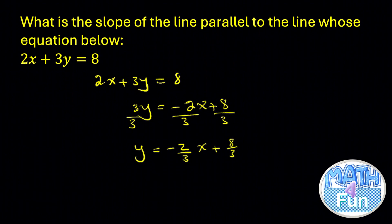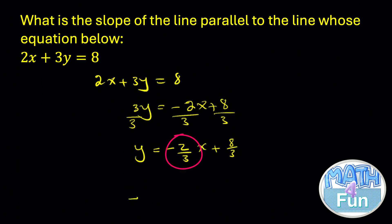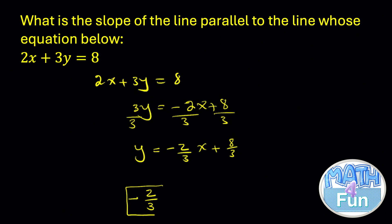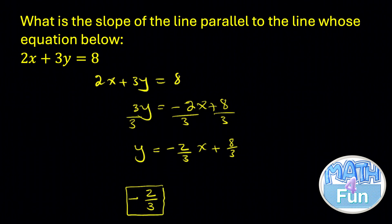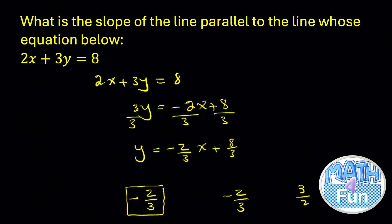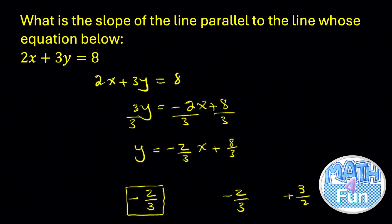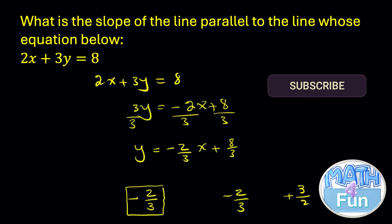They are asking for the line parallel to this, which means it has the same slope. So the slope is minus 2 over 3, and that would be the answer. If they were asking for a line perpendicular to this, we take minus 2 over 3, flip the fraction to get 3 over 2, and change its sign to plus 3 over 2 — because they are perpendicular. In this question they asked for parallel, but just in case they ask for perpendicular, you flip the fraction and change its sign, because it's the opposite reciprocal.